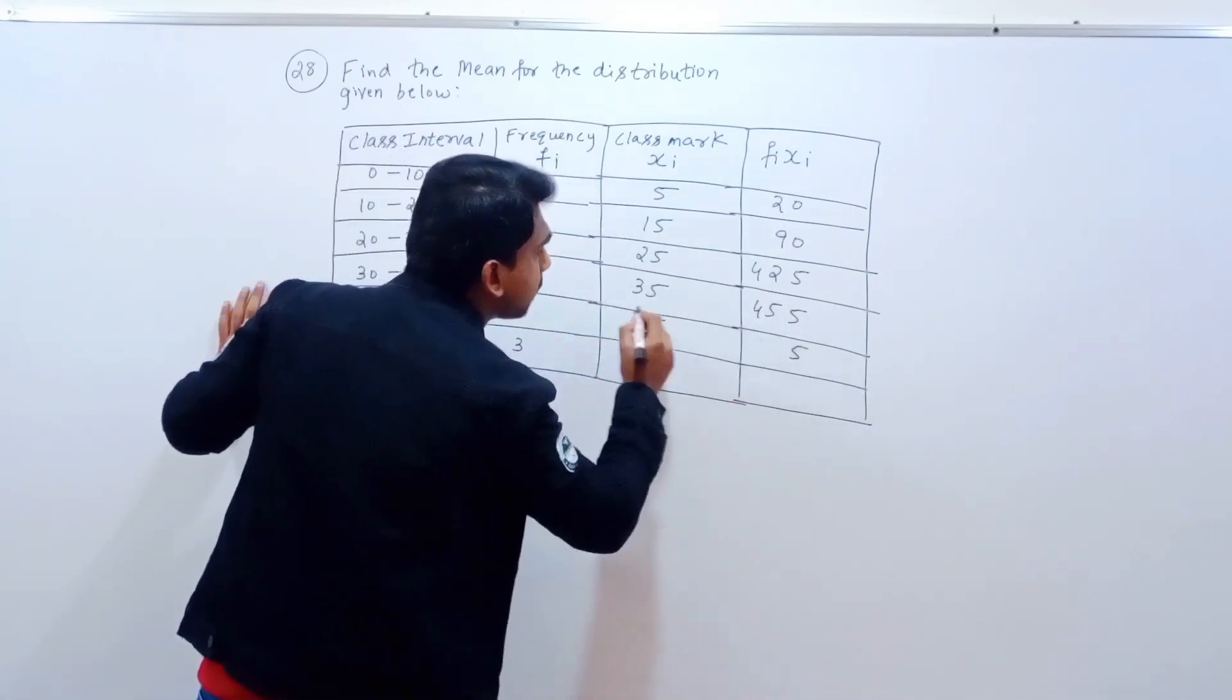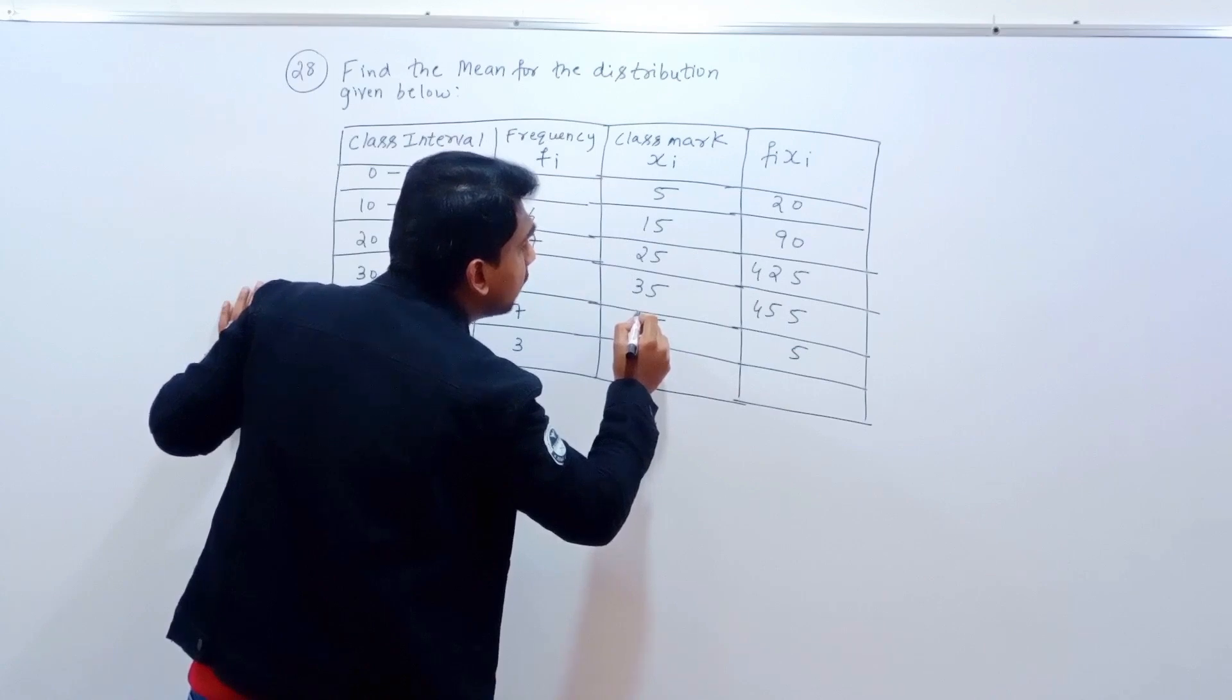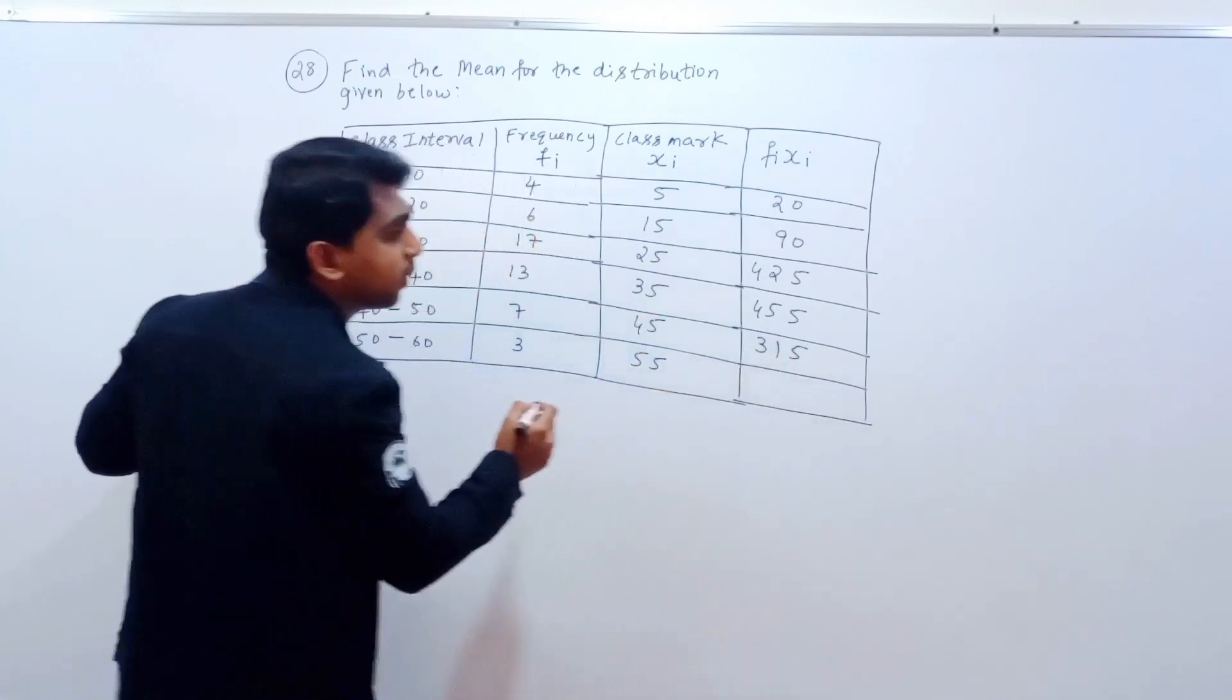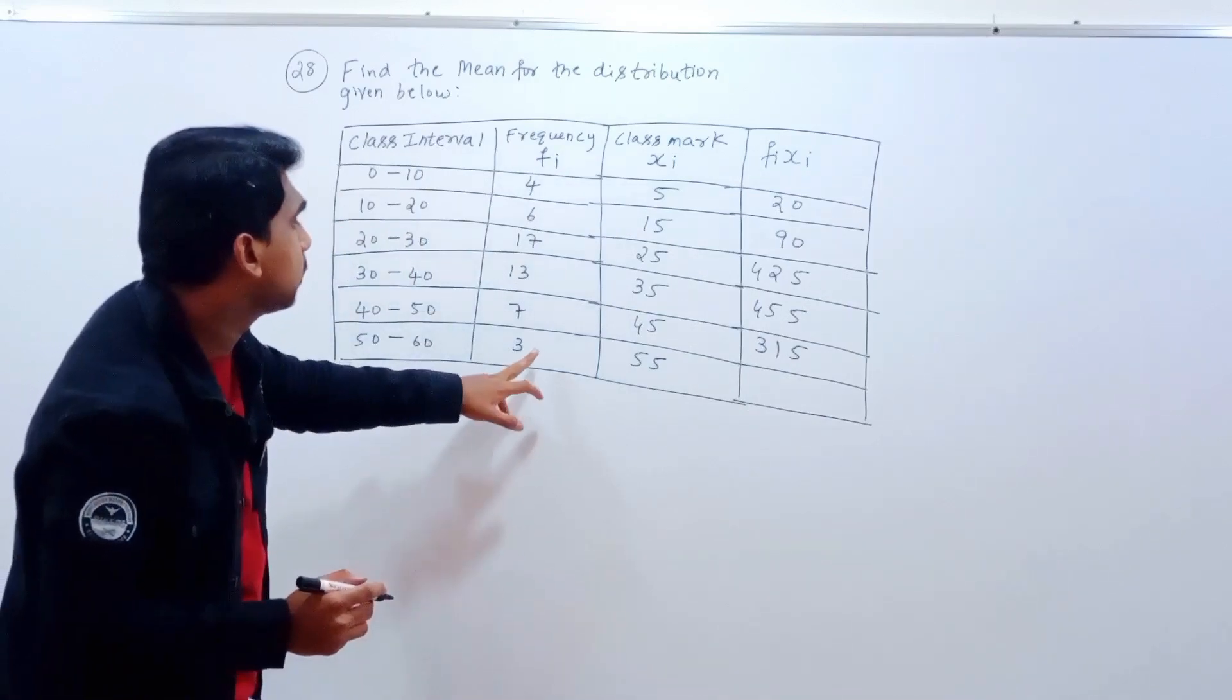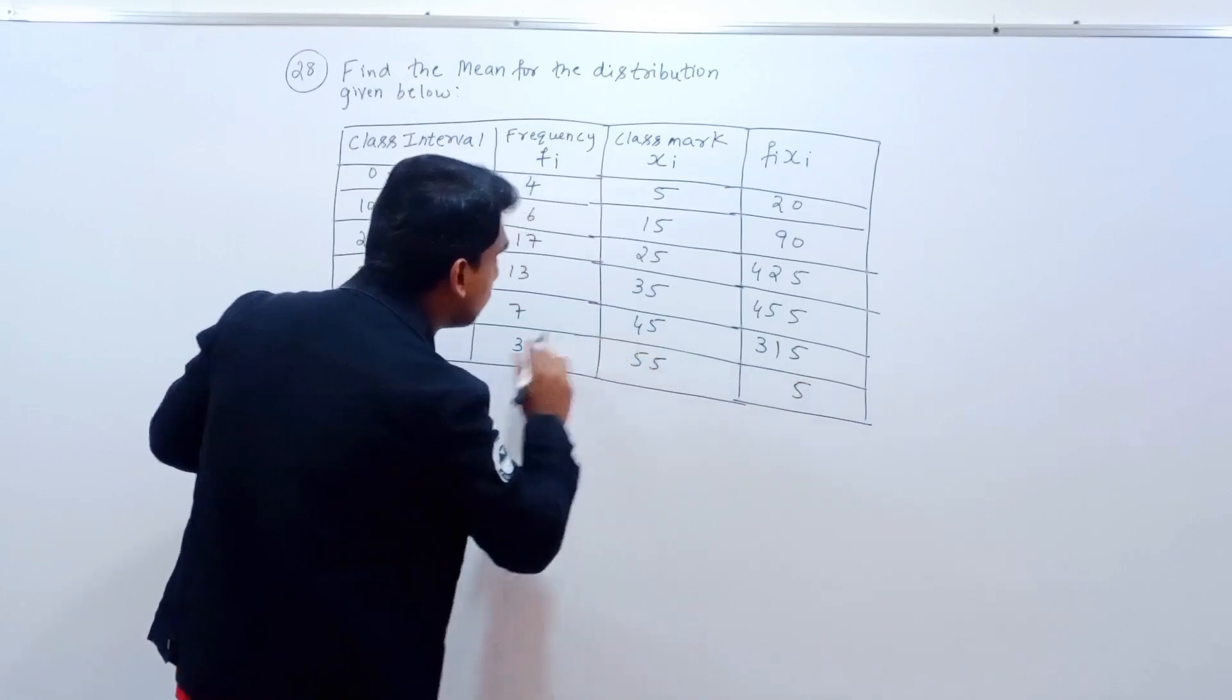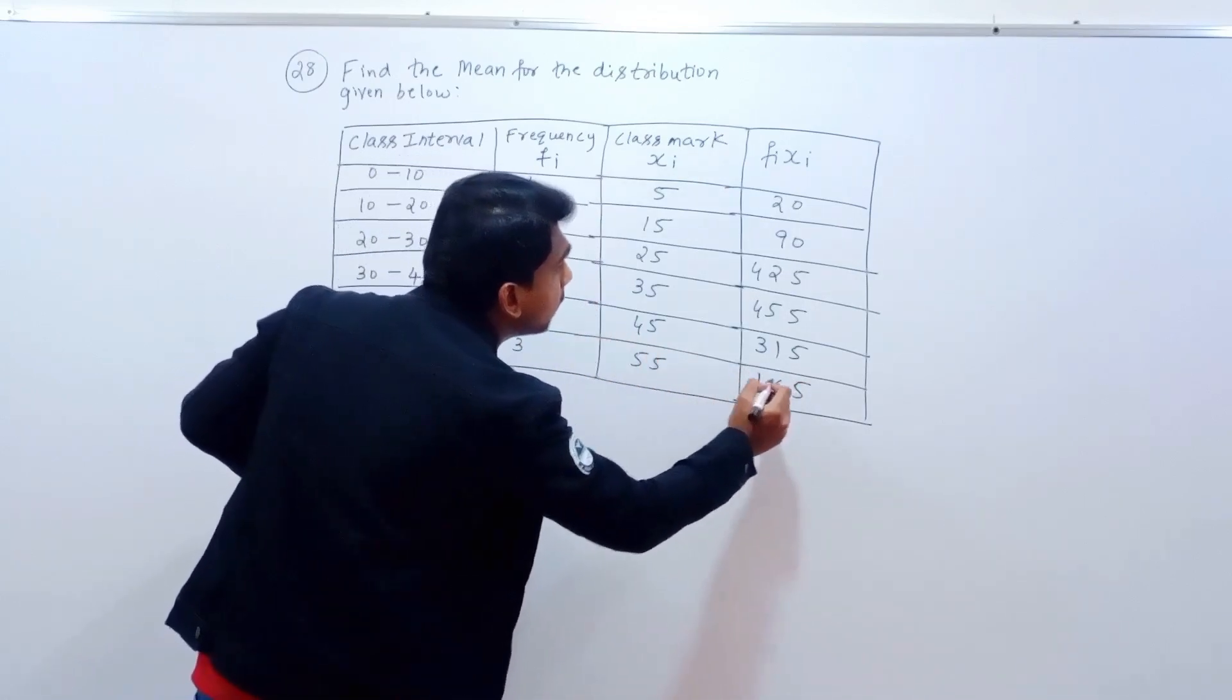7 times 5 is 35, 3 carry. 7 times 4 is 28 plus 3 is 31, which gives 315. Next step: 15 times 55 is 825.